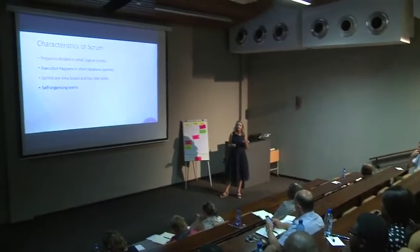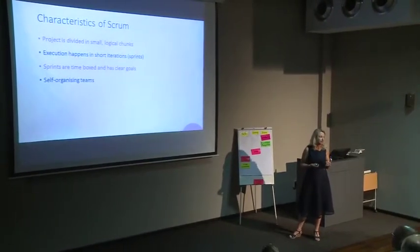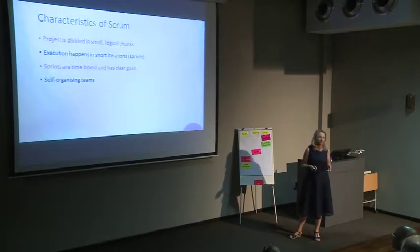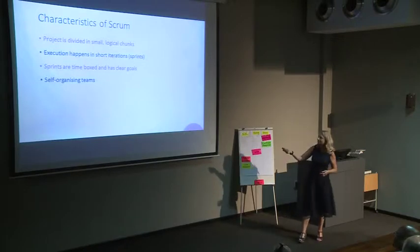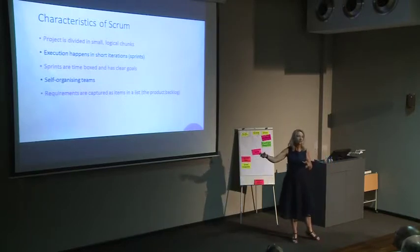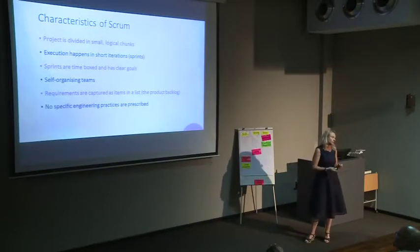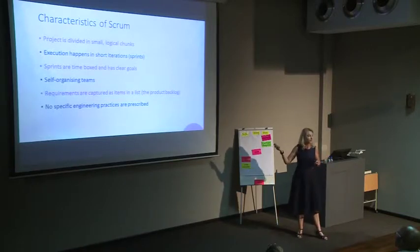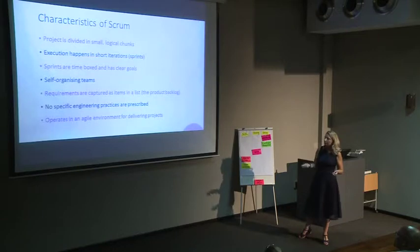Self-organizing teams — the guys decide how to do the work and just get it done, nobody checks off on them. If somebody comes in late and leaves early, the team sorts it out. When you're all accountable to deliver something at the end of two weeks, the team actually does manage it. Requirements are captured as items in a product backlog list — on those little cards we put it on the product backlog, and during sprint planning we decide the goal and take tasks off the requirements list. No specific engineering practices are prescribed for Scrum — it works very well with extreme programming but that isn't required.